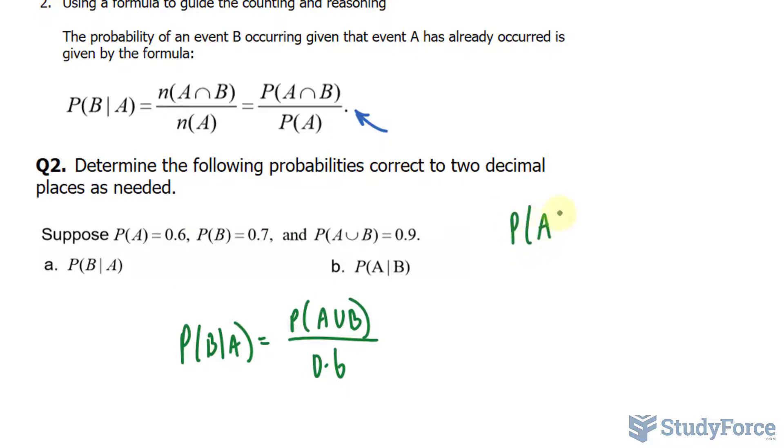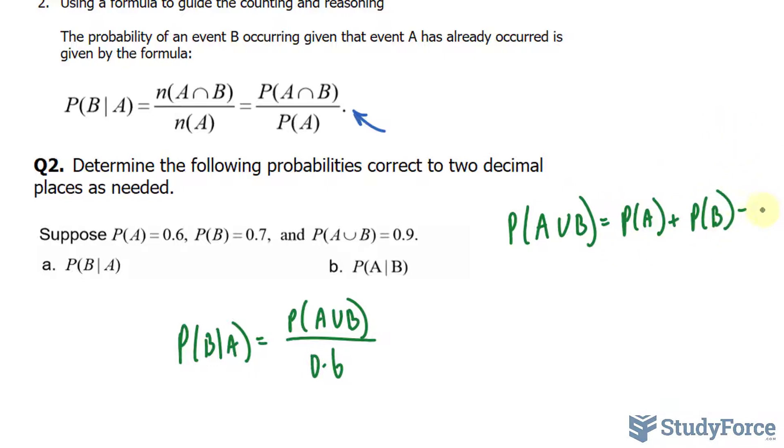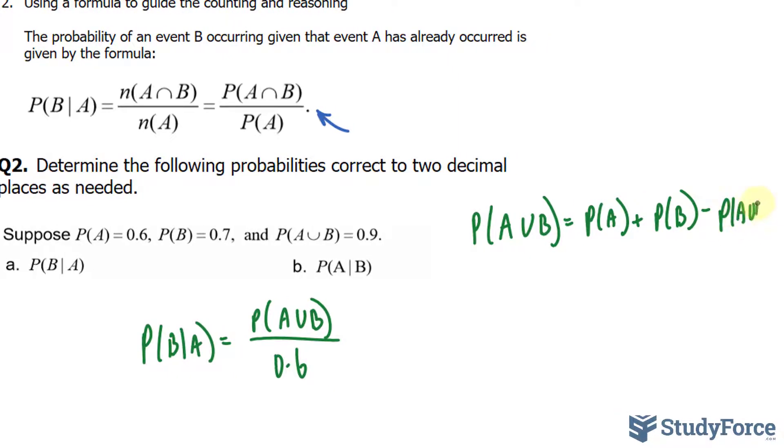The intersection of A and B equals the probability of A plus the probability of B minus the union of A and B.